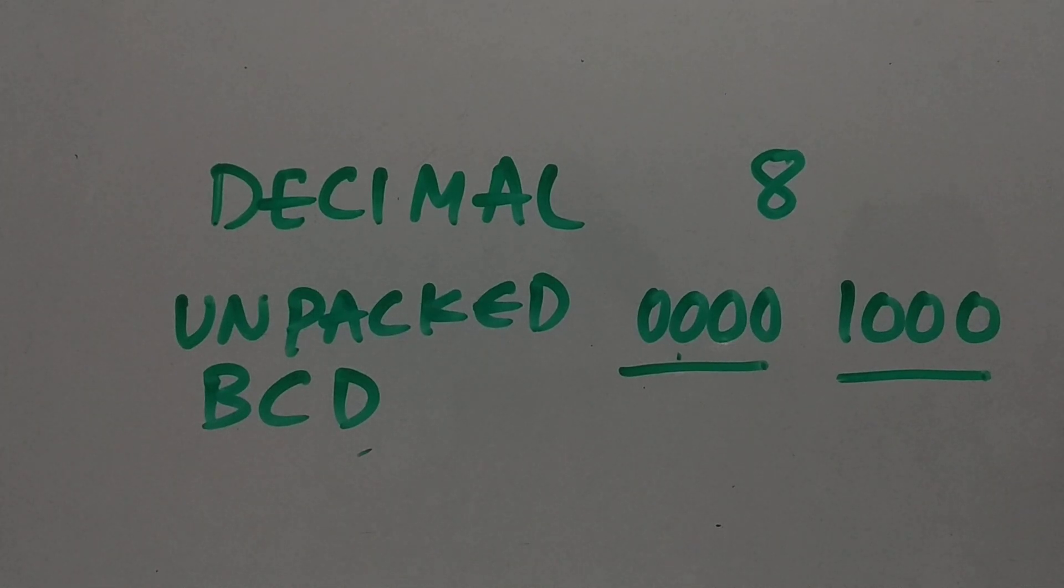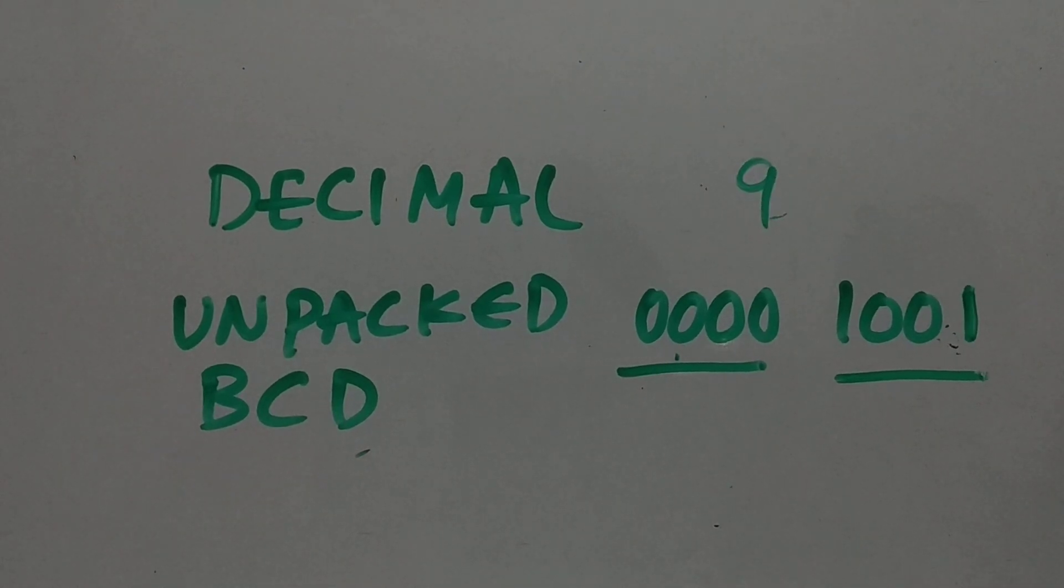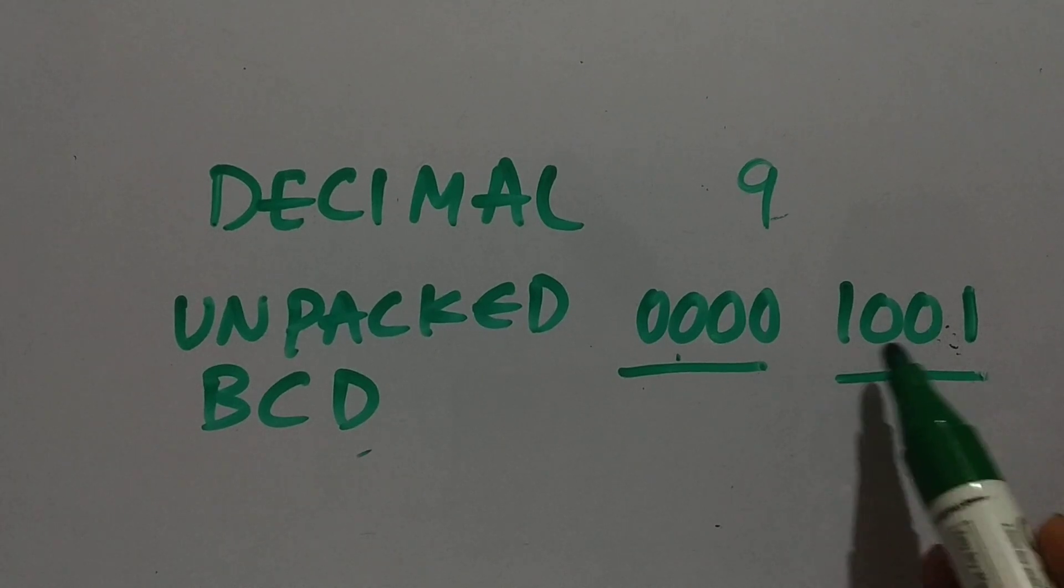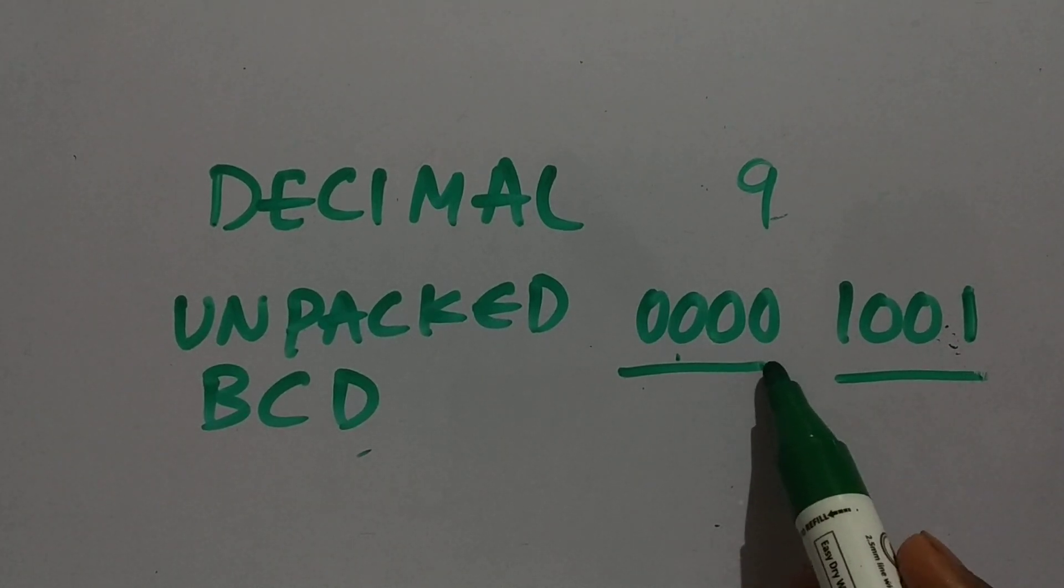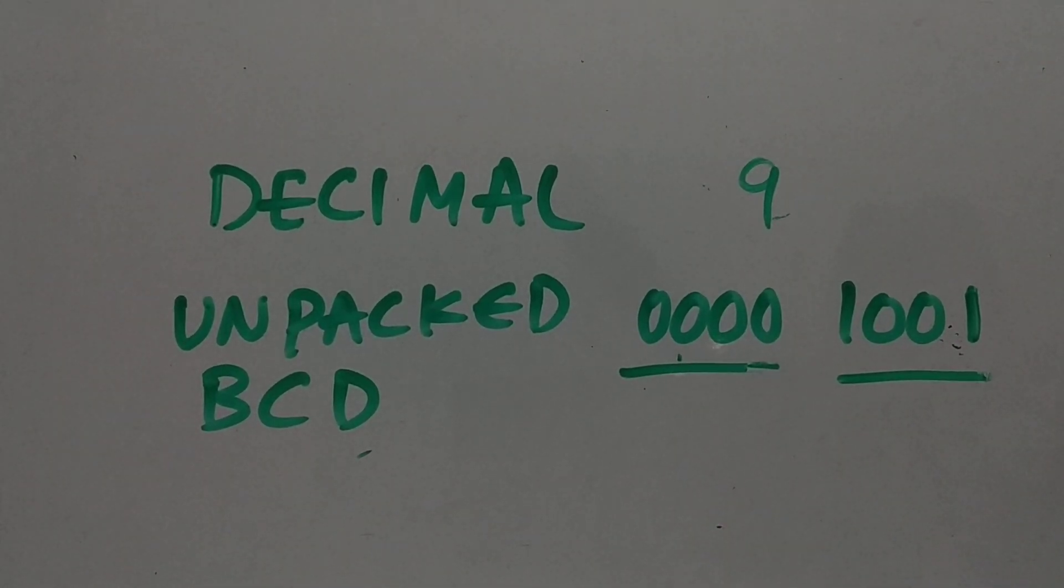Let's take one more example: 9. In binary, we represent it as 1001. So the upper nibble should be 0000, which has no significance. For unpacked, we are just storing four extra bits which is of no use in unpacked BCD.